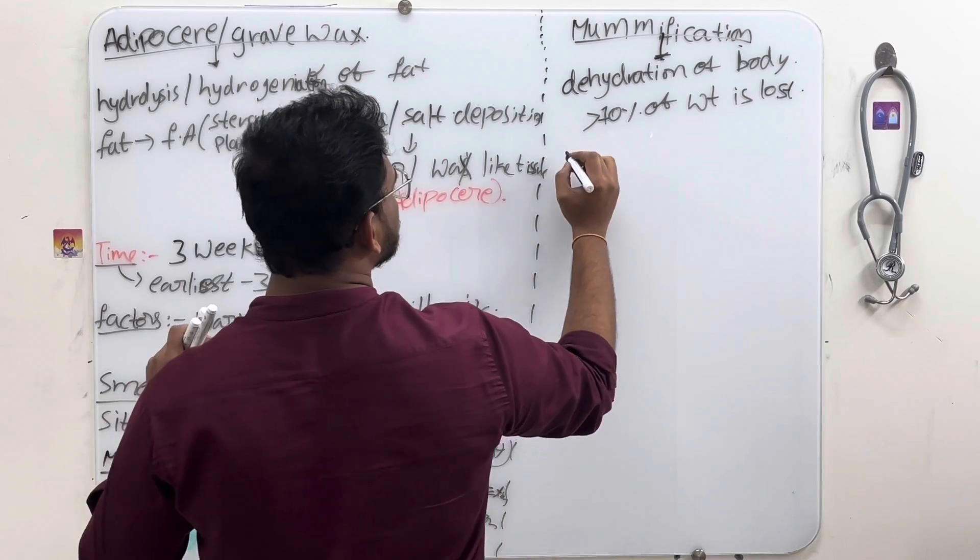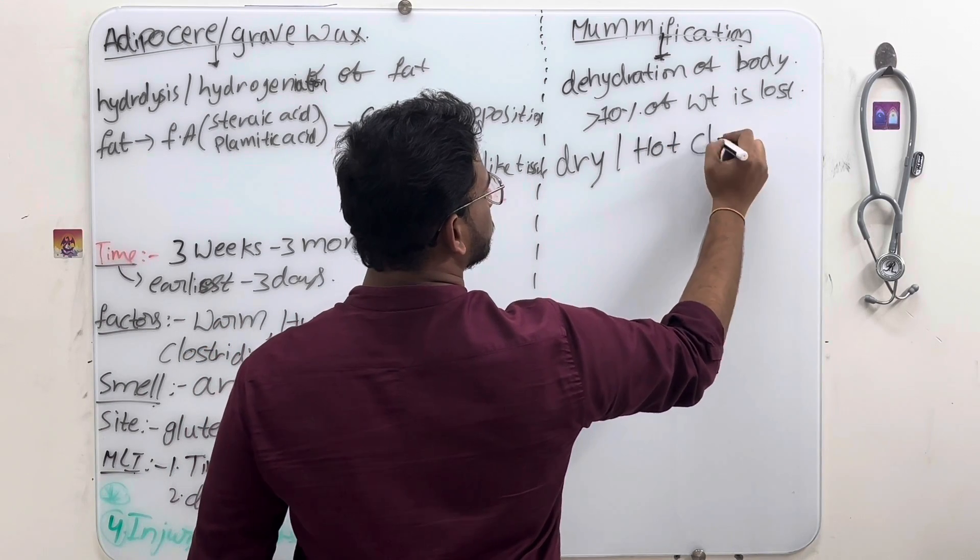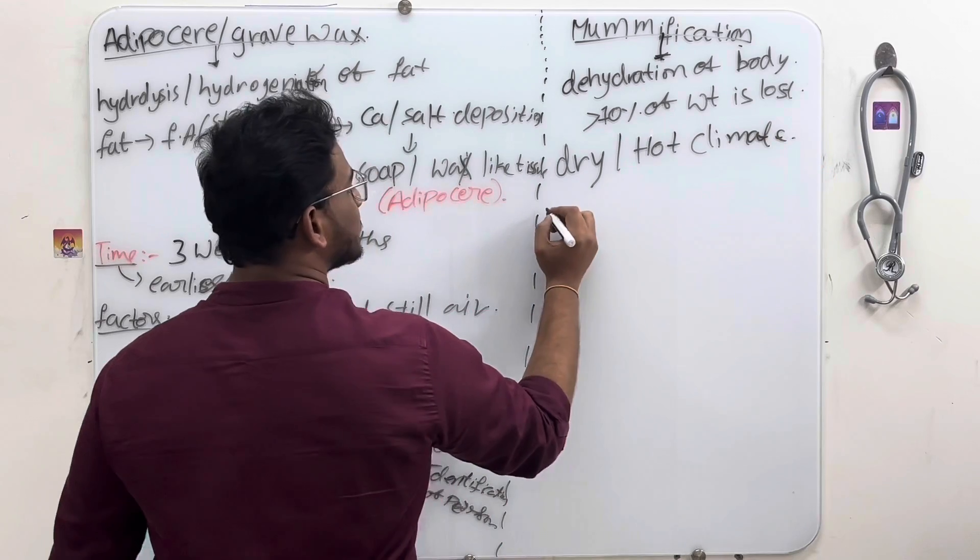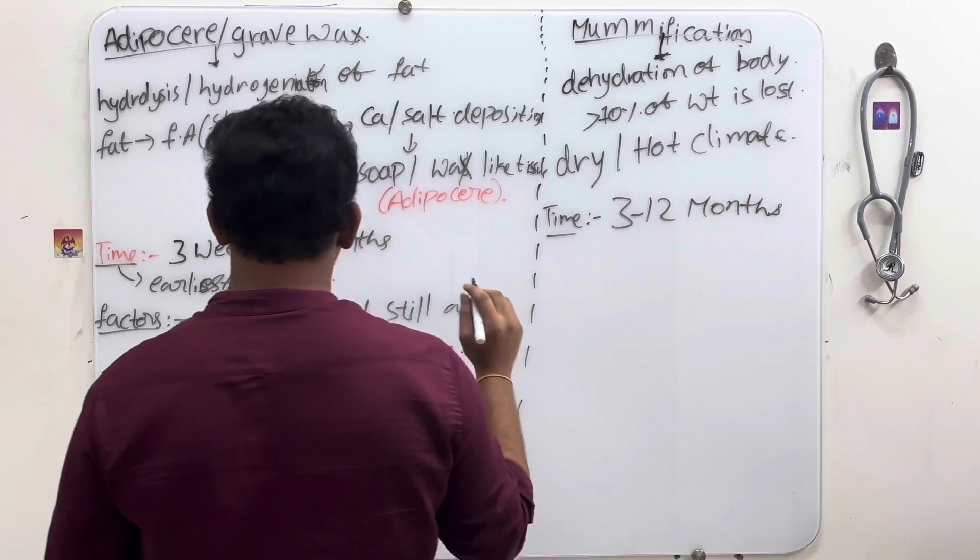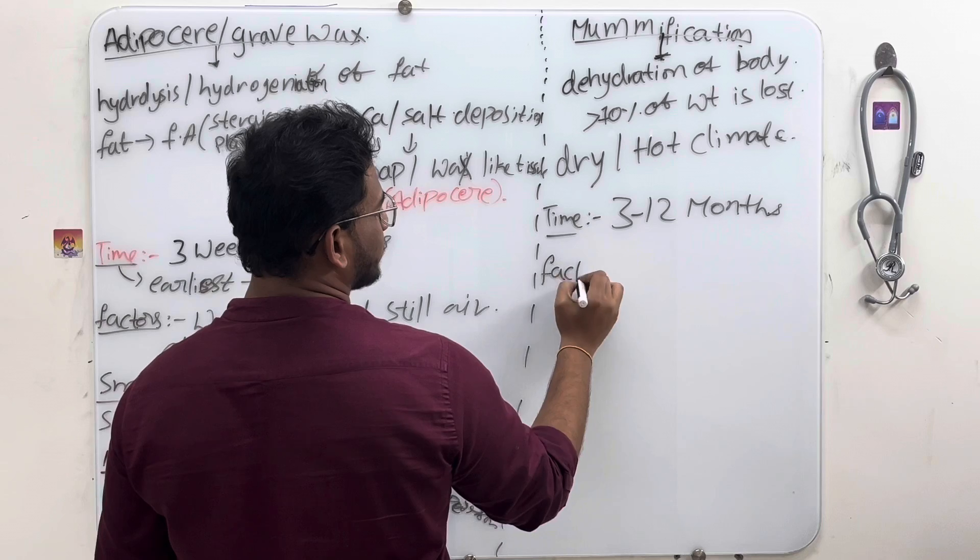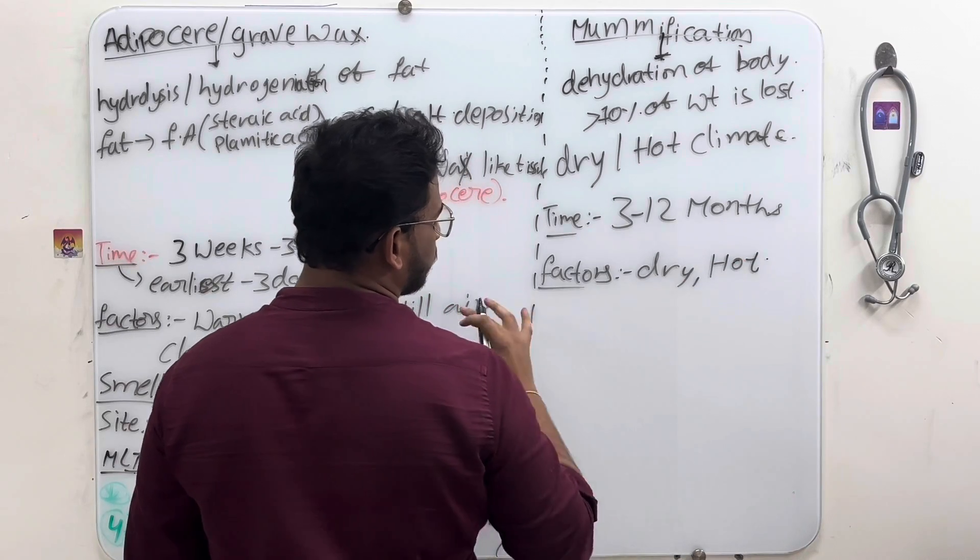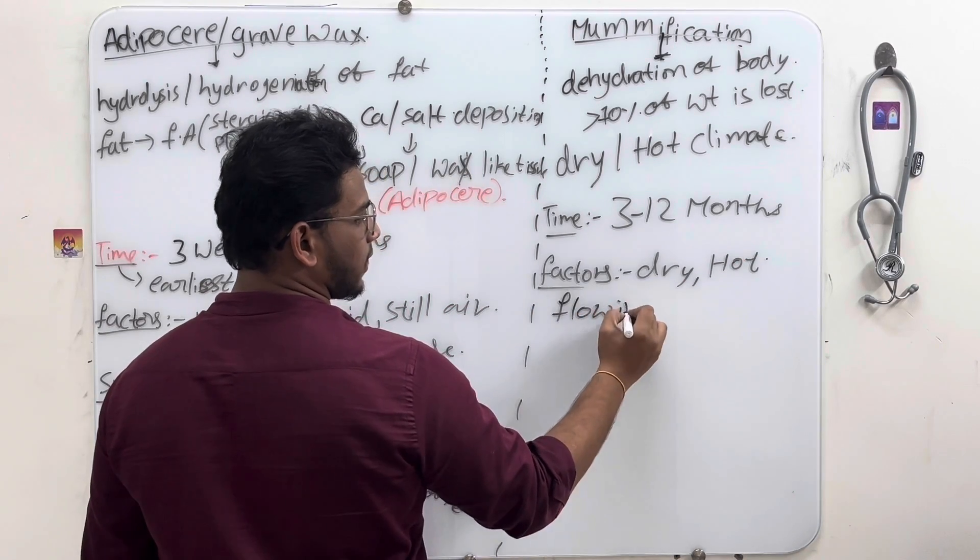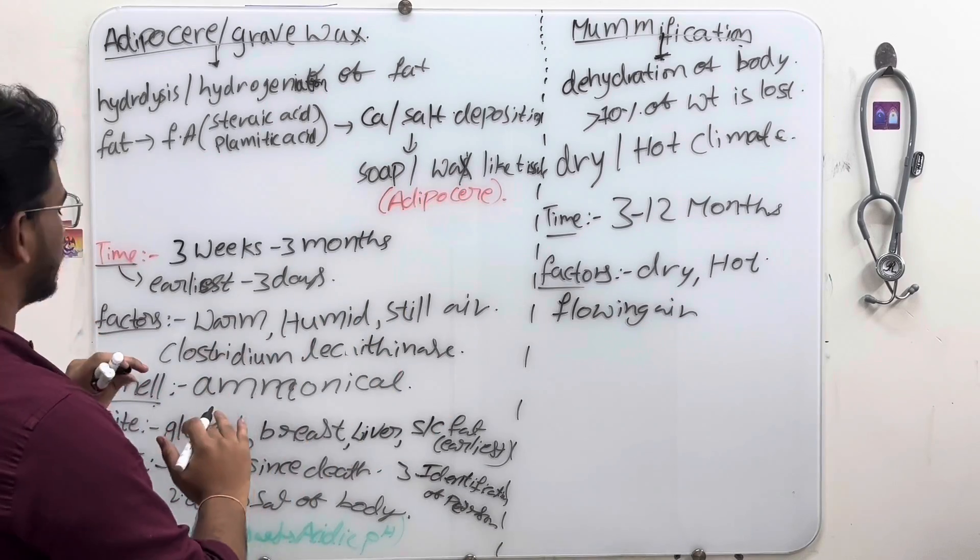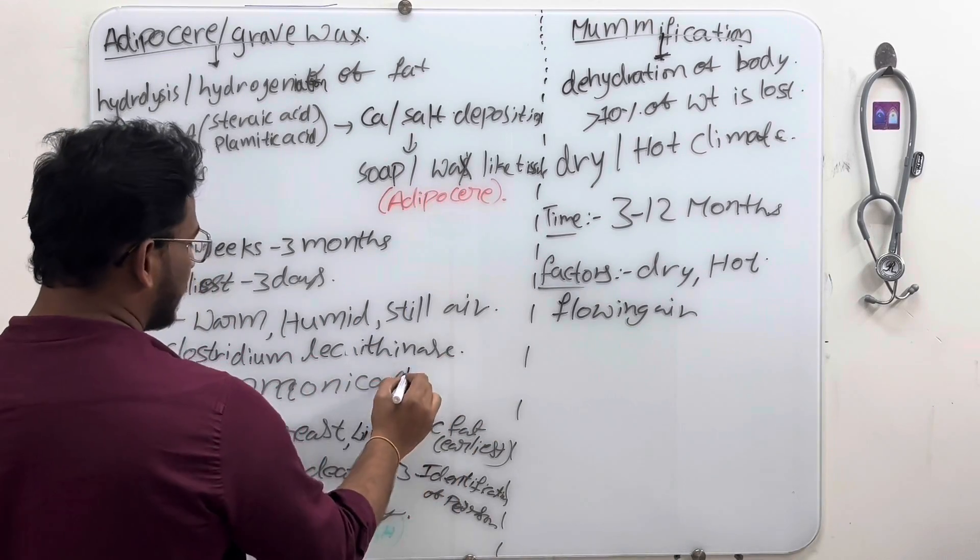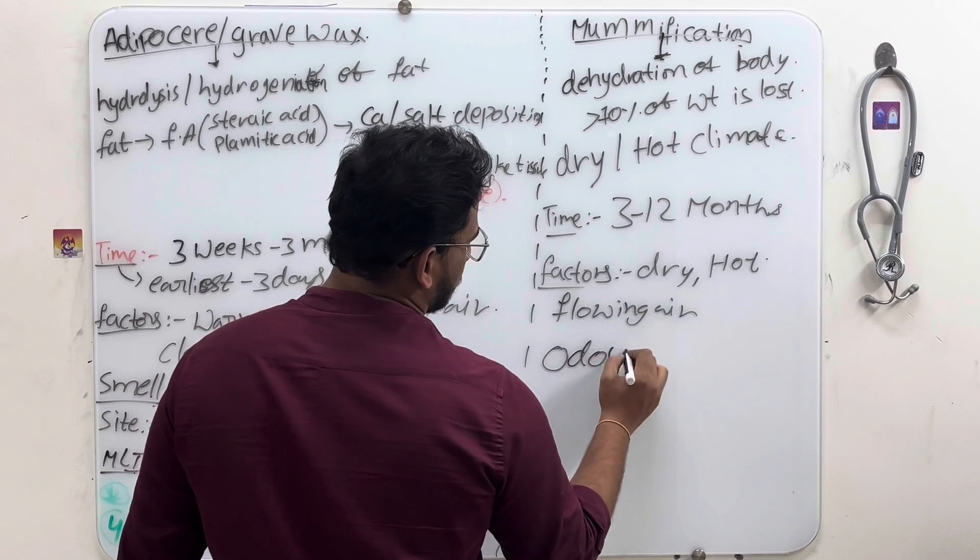The favorable conditions are dry and hot climate. Time period is 3 to 12 months. Factors are dry, hot, and flowing air. I'm comparing adipocere and mummification for easy understanding. The smell is odorless, unlike the ammoniacal smell of adipocere.